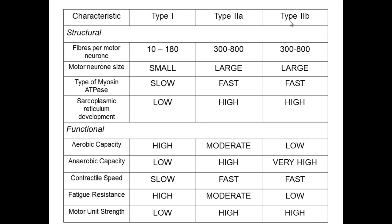An interesting question is: does your genetics have a role to play in the types of muscle fibers that you have when you're born, and does training affect any of the proportions of these types of muscle fibers?